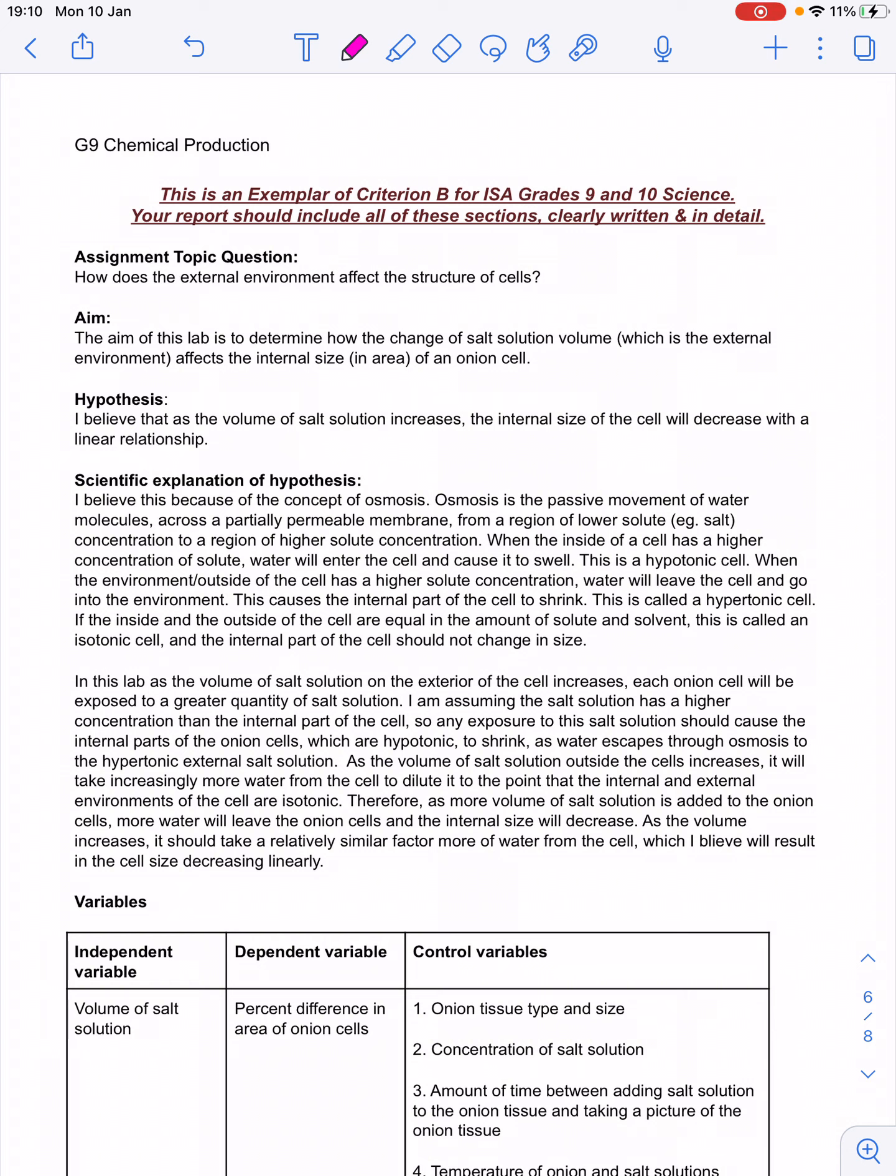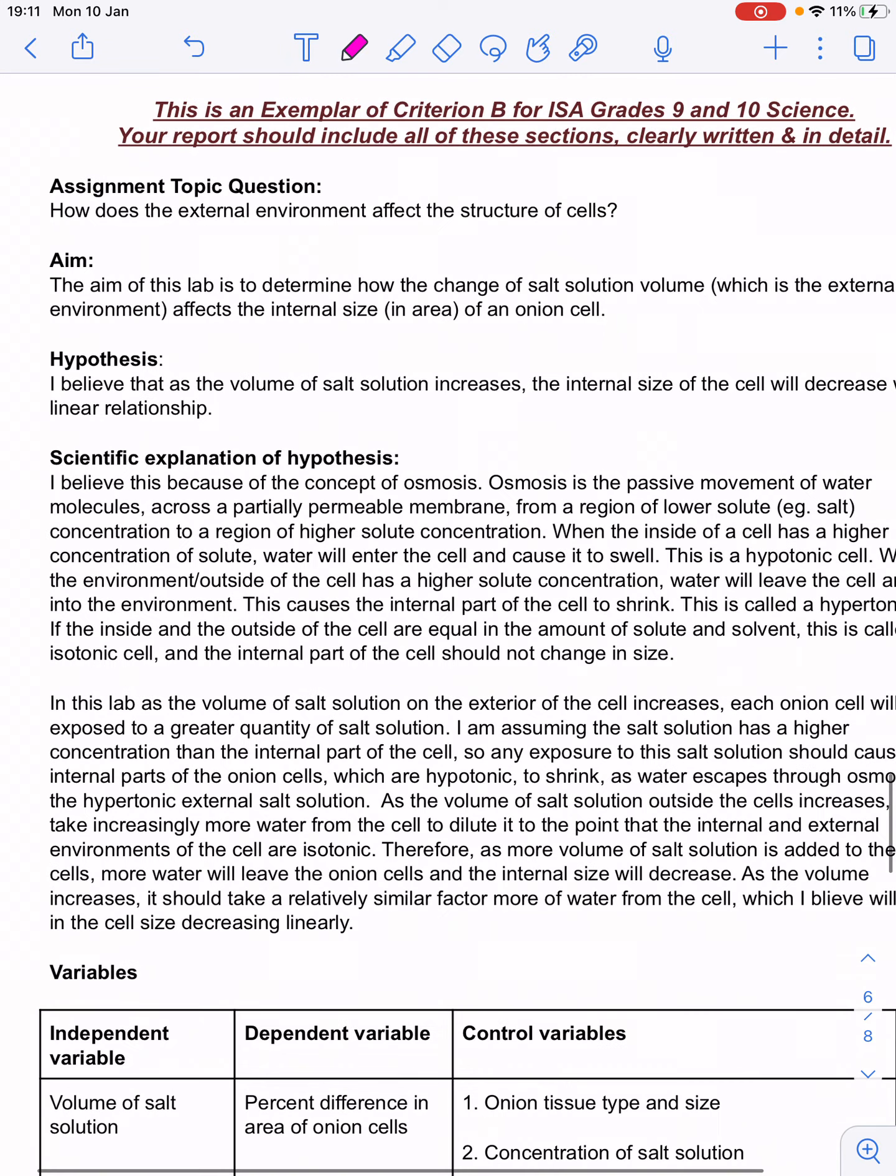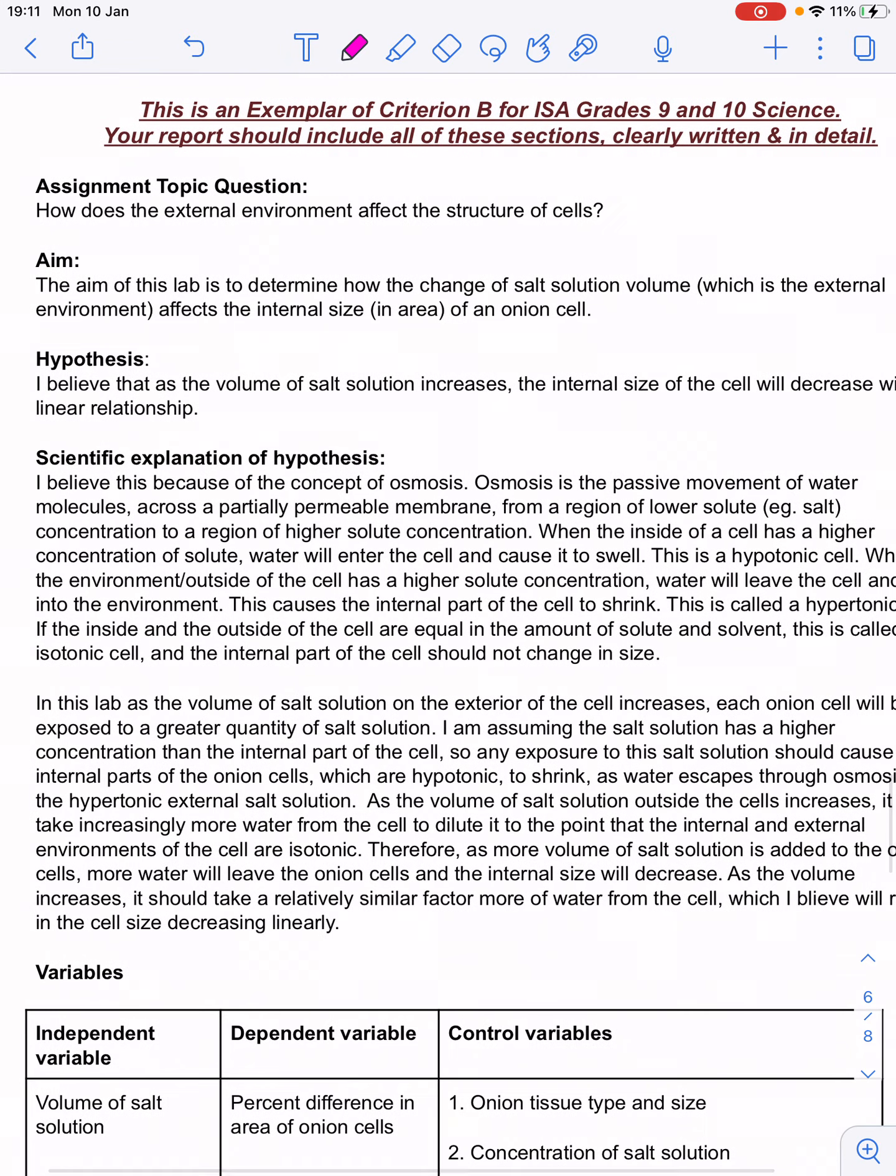Criterion B1 has to do with outlining the aim, or the research question that you're trying to answer, your hypothesis, and the explanation of your hypothesis. Now, this actually isn't a very good research question, this exemplar that we've chosen. How does the external environment affect the structure of cells? This external environment is way too vague for this lab.